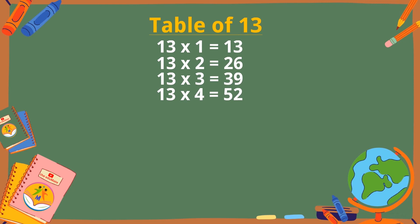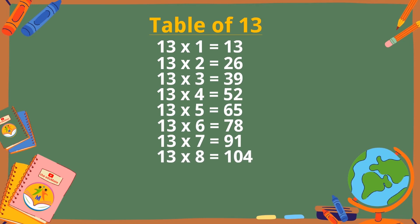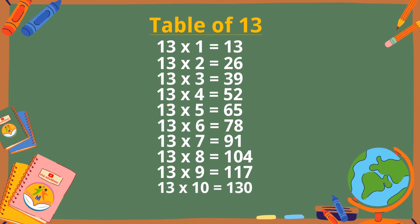Table of 13. 13×1 is 13, 13×2 is 26, 13×3 is 39, 13×4 is 52, 13×5 is 65, 13×6 is 78, 13×7 is 91, 13×8 is 104, 13×9 is 117, 13×10 is 130.